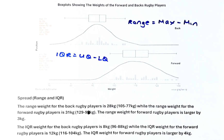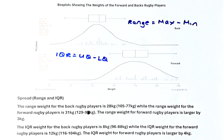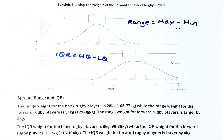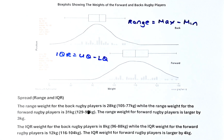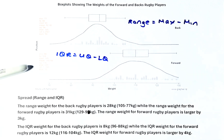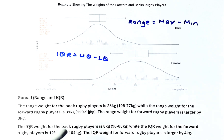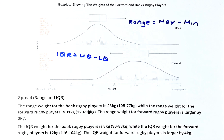So writing in words: the range weight for back rugby players is 28 kg, because 105 minus 77 is 28 kg. While the range weight for the forward rugby players is 129 minus 98, which gives us 31 kg.